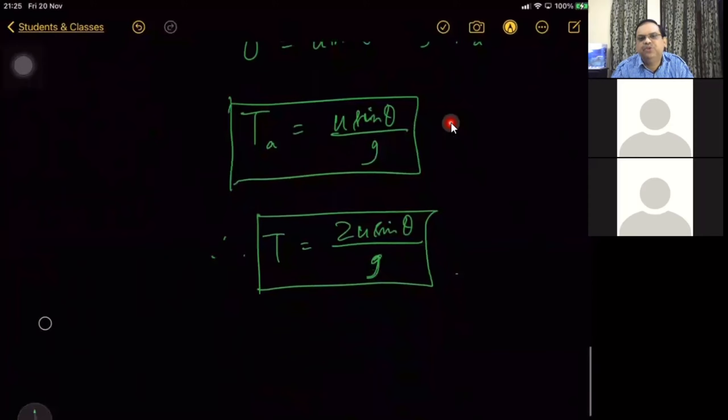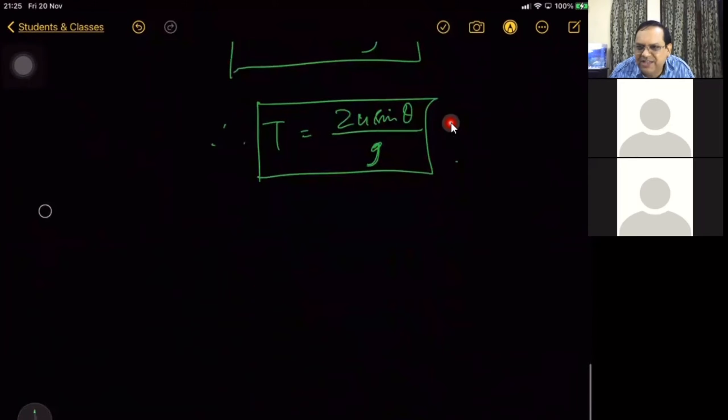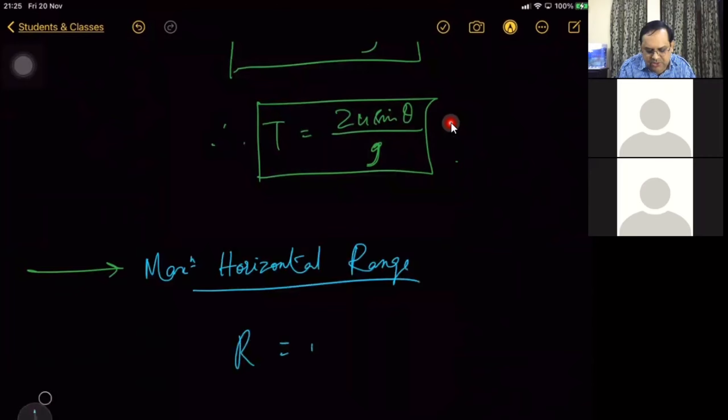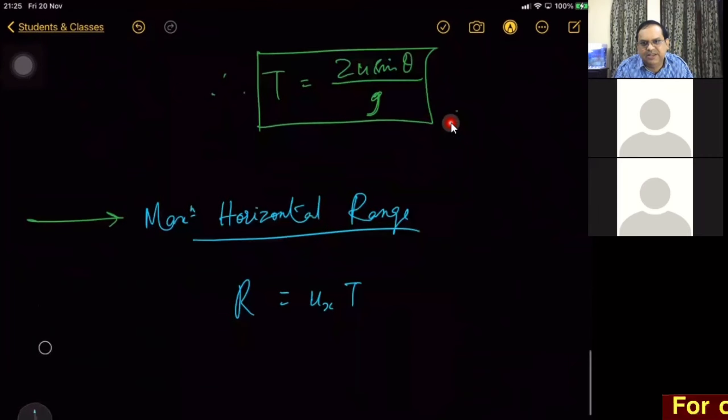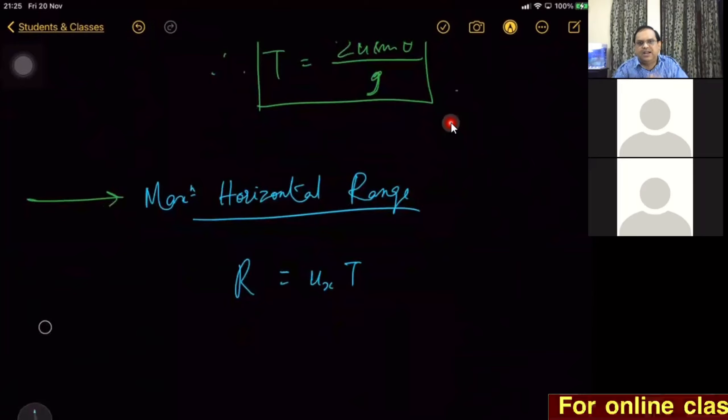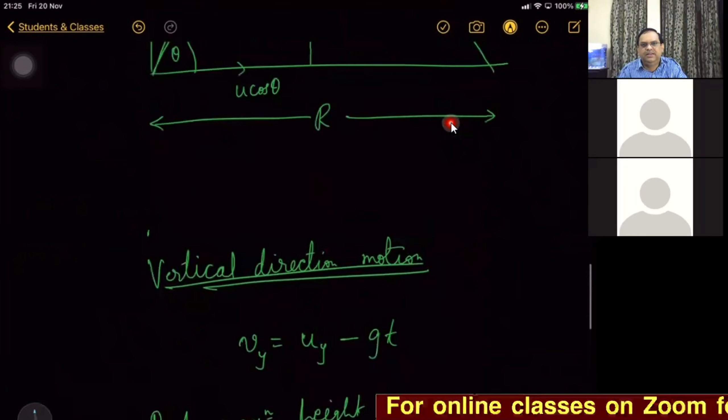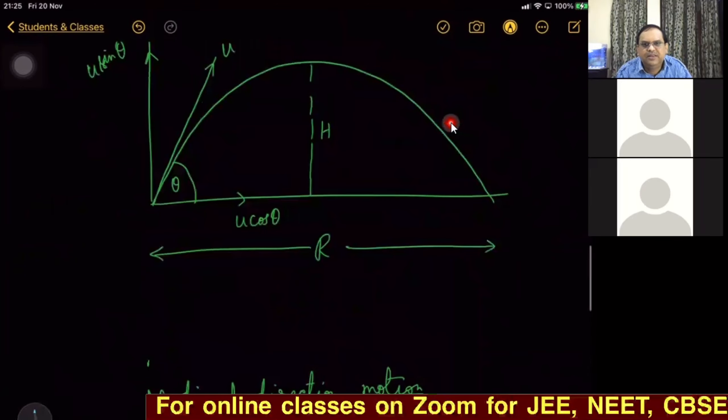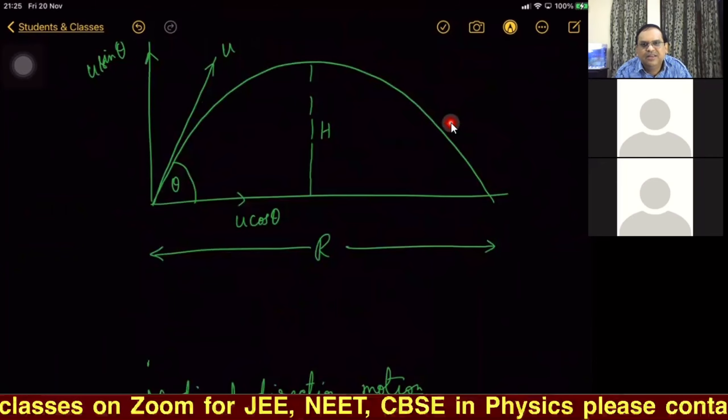Now, how to prove maximum horizontal range R = u_x T? Who will tell me the reason? I have written directly s = ut + ½at², and a in horizontal direction is zero.